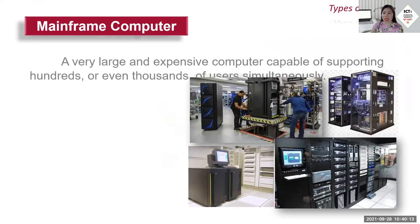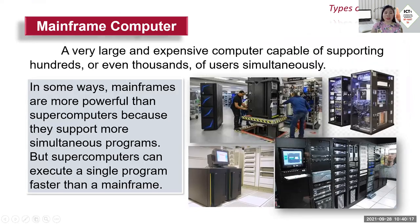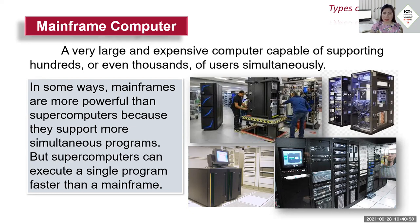Next is the mainframe computer — a very large and expensive computer capable of supporting hundreds or even thousands of users simultaneously, with consistent speed and no interruptions. In some ways, mainframes are more powerful than supercomputers because they support more simultaneous programs, though a supercomputer can execute a single program faster than a mainframe.